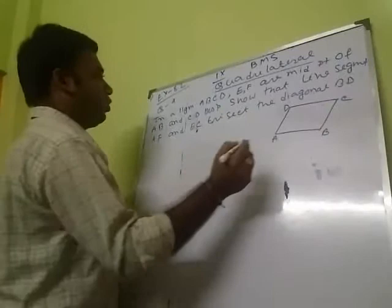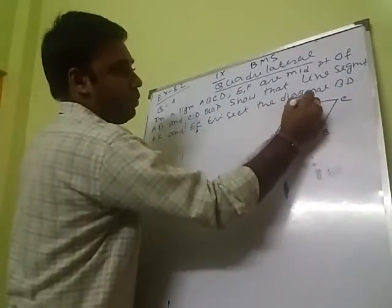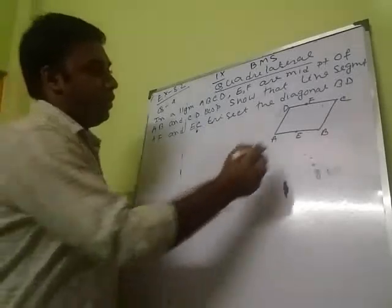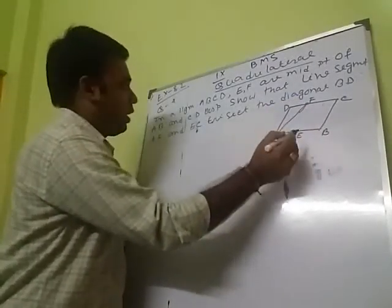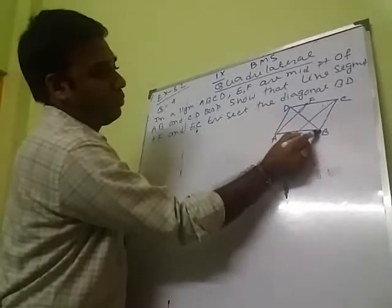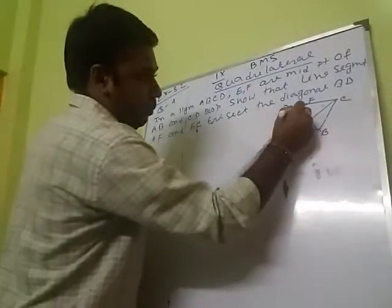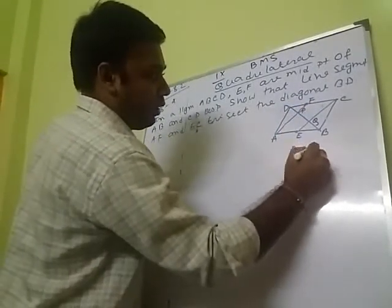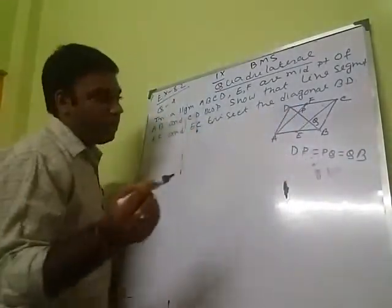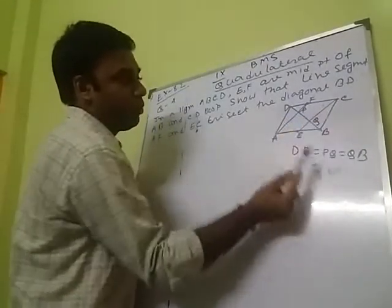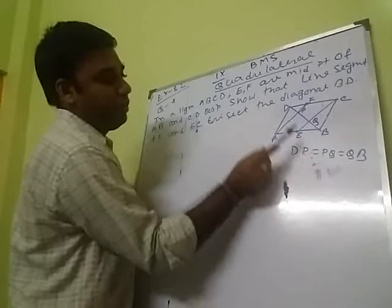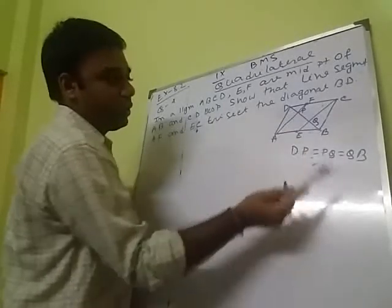E and F are the midpoints of AB and CD respectively. We are given that line segments AF and EC trisect the diagonal BD at points P and Q. It means we have to prove that DP equal to PQ equal to QB.